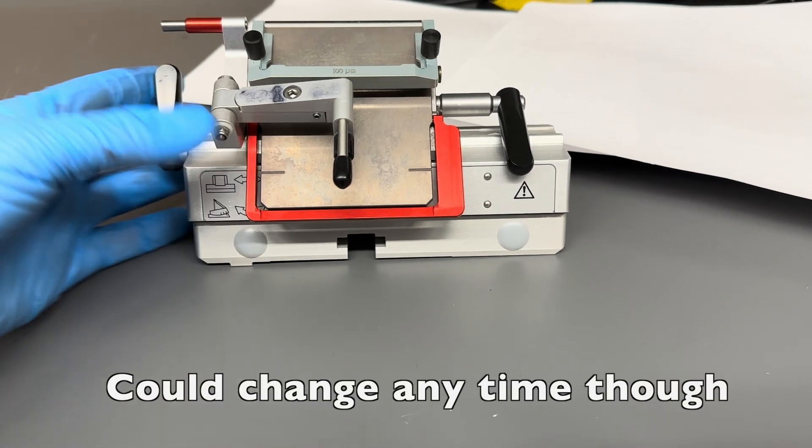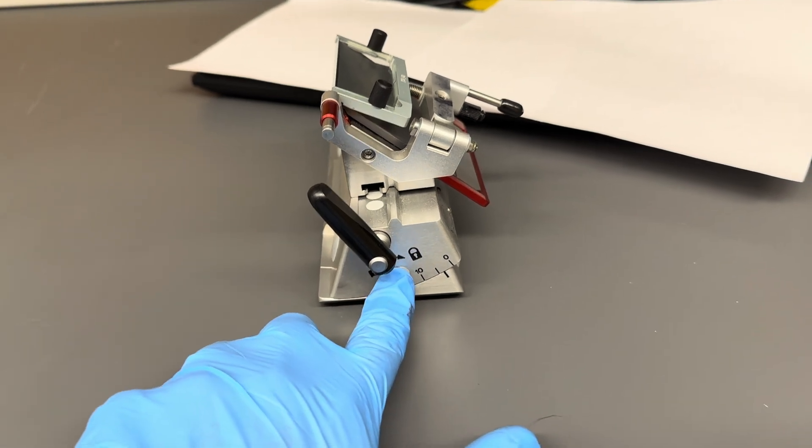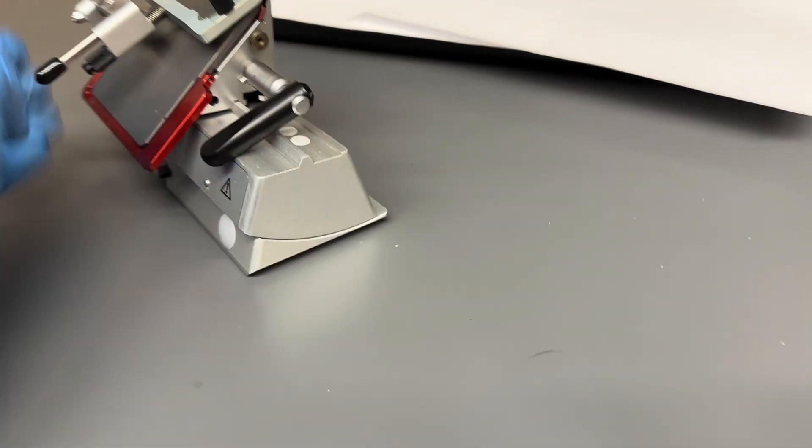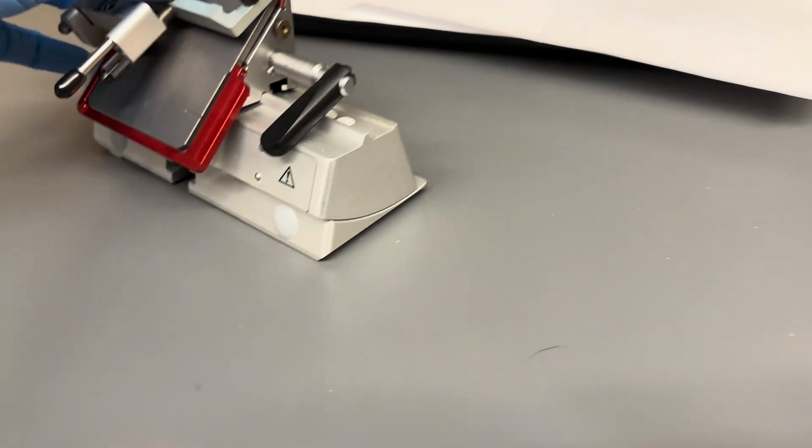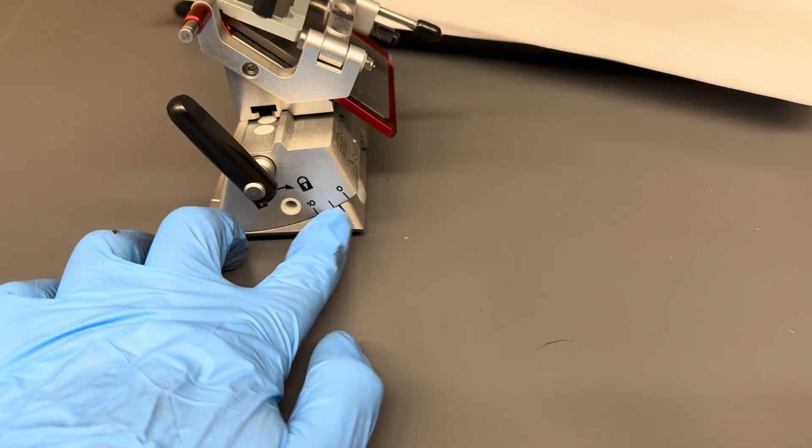What I wanted to show you is that Leica has actually removed the lever. There would have been a lever here, perhaps over here, to adjust the knife angle, which should be somewhere between three and five degrees.